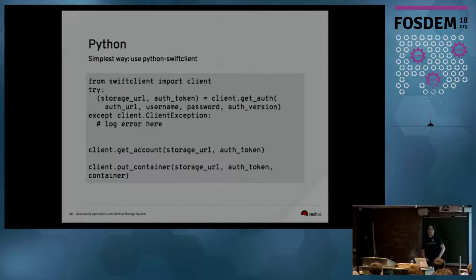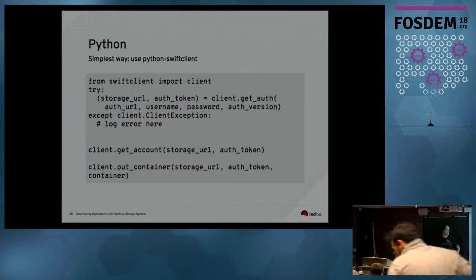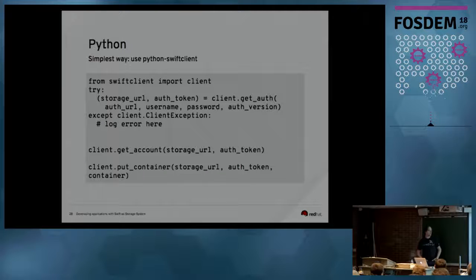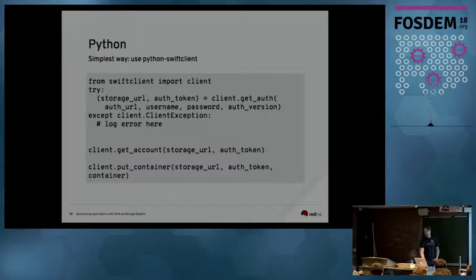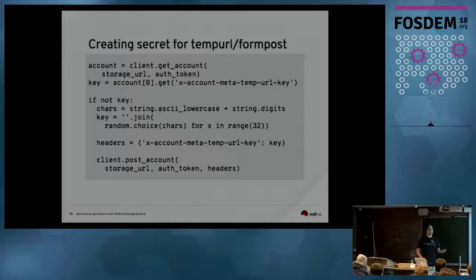If you want to use Python, the simplest way is the Python Swift client, which includes reusable libraries for your application. You get an authentication token and storage URL using your username and password, and from there you have actions like get account, put container, put object, list container, and so on. When your application wants to give out temporary URLs, a good approach is to first check if a TempURL key already exists on the container or account, and if not, create one randomly and set it on the account.